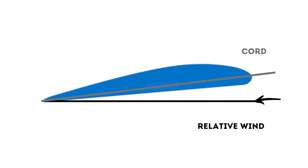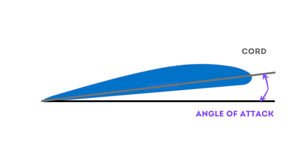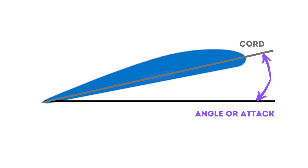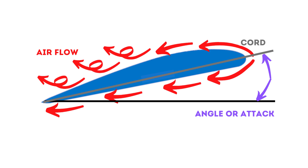Another important element is the angle between the relative wind and the cord of the wing — called the angle of attack. Due to this angle, the airflow on top of the wing will tend to not follow the shape of the wing to its end, creating drag. As you increase the angle of attack, more airflow on top won't follow the wing shape, creating even more drag and reducing the lift of the wing.